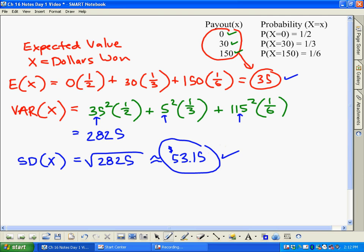But that will be what we call our standard deviation here, and you always do the variance first, take your answer, square root it, and that gives you the standard deviation. So that's the basics on how expected value works.